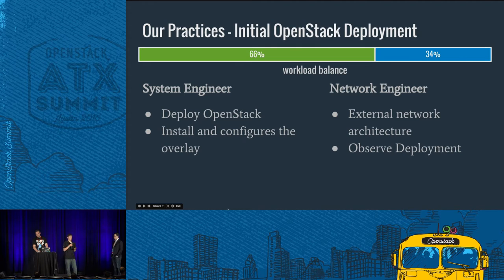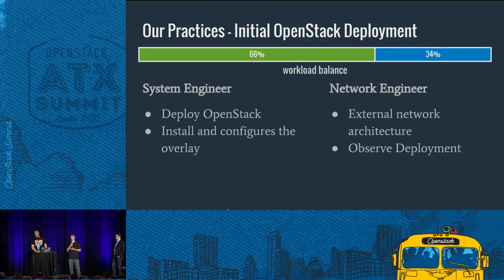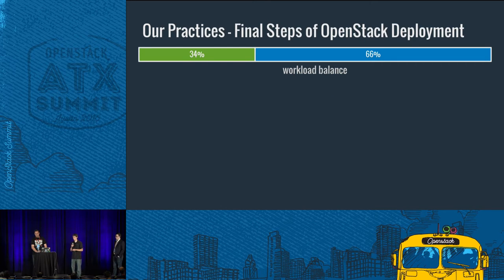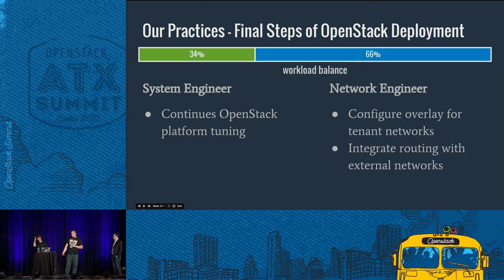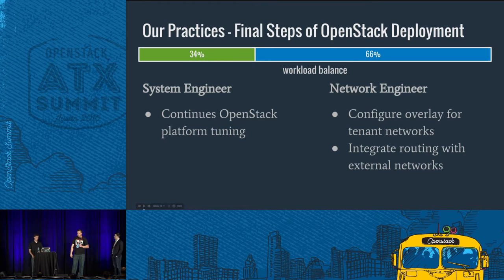Critically, the network engineers were also observing the deployment with us — we were in the same room. We were projecting it on a screen and ensuring the network engineers were engaged so they would understand how the environment was getting deployed, because their network infrastructure is going to be running on these Linux hosts. In the final steps of deployment, it ramped up toward the network engineer taking on more responsibility: configuring the overlay to support all tenant networks, integrating the routing, establishing BGP sessions, making sure everything flows through, and creating test tenants, while the system engineer was tuning the platform and getting things finalized.